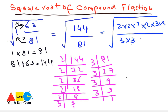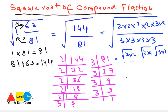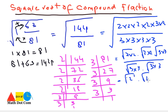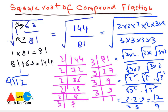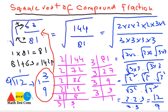We have got 12 over 9, which is then converted into compound (mixed) form: 12 divided by 9 gives 1 remainder 3, so the answer is 1 whole 3 over 9. This is the square root of 1 whole 63 over 81. This is how you can find the square root of a compound fraction. Thank you for watching.